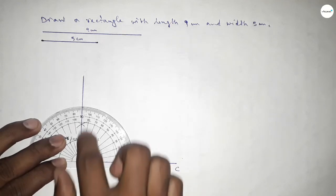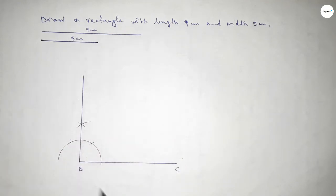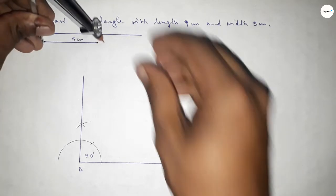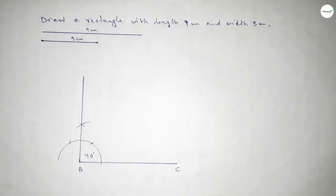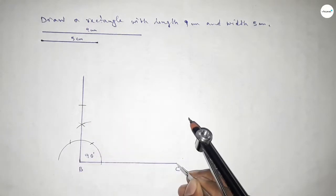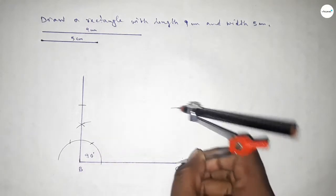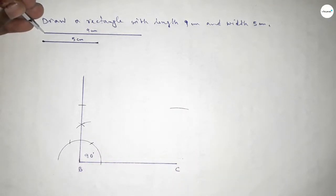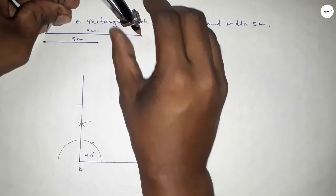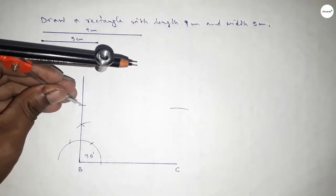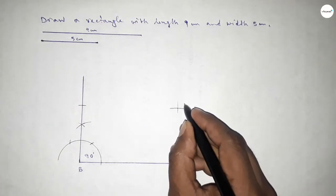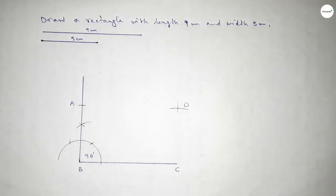Checking — this is perfectly 90 degrees. Now taking the length 5 centimeter, putting the compass and cutting arcs at the required points. Then taking the length 9 centimeter, putting the compass and cutting arcs so both curves intersect at point D.